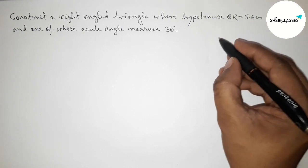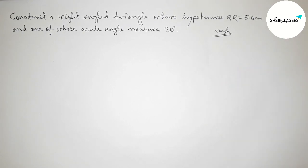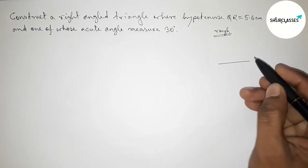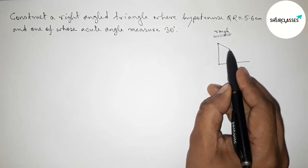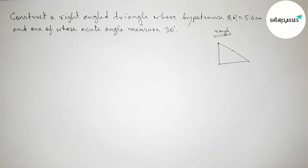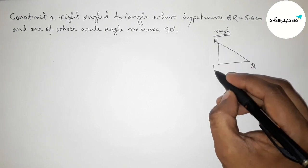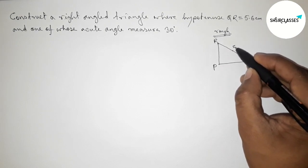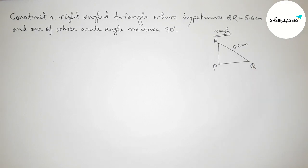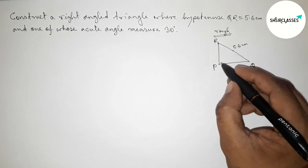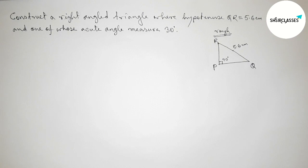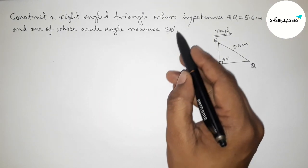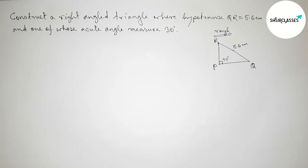First, discussing some important calculations. We draw a rough right-angled triangle, taking points Q, R, and P. The hypotenuse QR equals 5.6 centimeters. We know that the angle opposite to the hypotenuse of a right angle triangle is always 90 degrees.